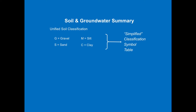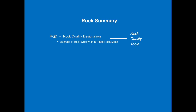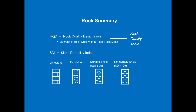Soil and groundwater summary: we use the Unified Soil Classification System for gravel, sand, silt, and clays. W% is moisture content, QU is unconfined compressive strength, and N is the SPT blow count. The line with the upside-down triangle denotes the groundwater table. For a rock summary: RQD is the rock quality designation — the estimate of rock in place — and SDI is slake durability for shales and some sandstones. The symbology shows limestone, sandstone, durable shale (SDI greater than 95, denoted with smiley faces), and non-durable shale (less than 95, denoted with frowny faces). R gives you the auger refusal — where we drove down to rock and stopped without taking a core sample.